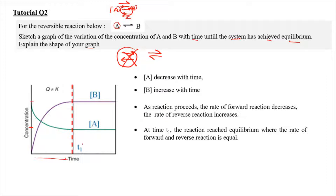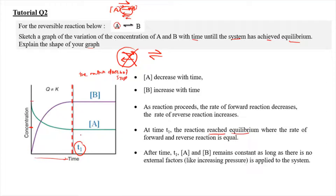This happens when it reaches time E1, at which equilibrium is achieved. After time E1, the reaction does not stop. Instead, the concentration remains constant at time E1, and the same goes for the concentration of B — it remains constant after time E1. This situation remains constant as long as there are no external factors acting on the system, and the condition must occur in a closed system.